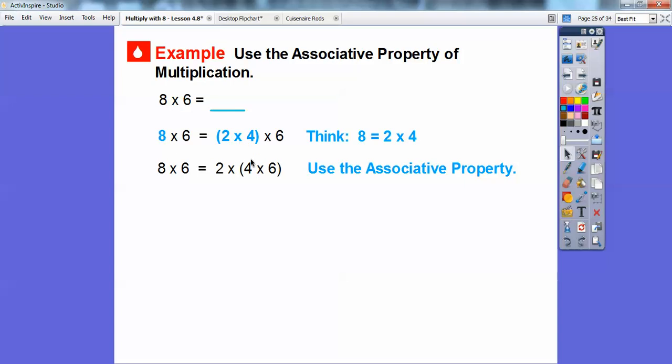we can reassociate and multiply 4 × 6 first. Four times six is 24. Then we can do 2 × 24, or double 24. So 24 + 24 equals 48.